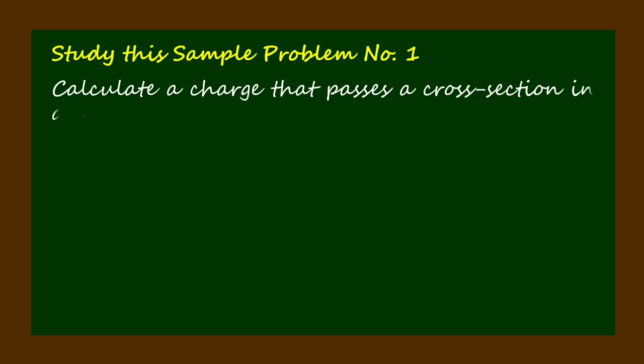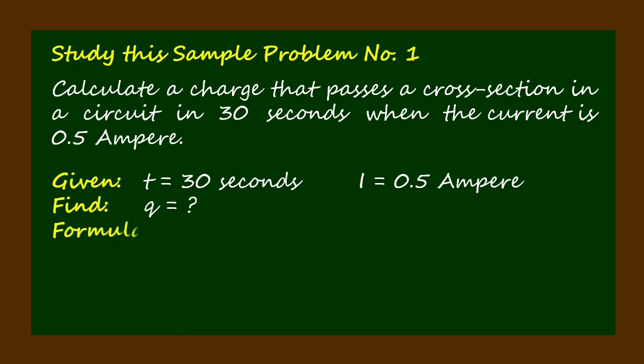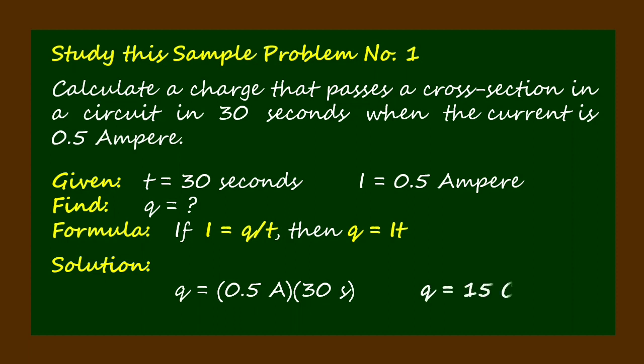Study this sample problem number one: Calculate the charge that passes a cross-section in a circuit in 30 seconds when the current is 0.5 ampere. Given: t = 30 seconds and i = 0.5 ampere. Find: q. Formula: If I = q/t, then q = I × t. Solution: q = 0.5 ampere × 30 seconds, thus the magnitude of charge q = 15 coulomb.